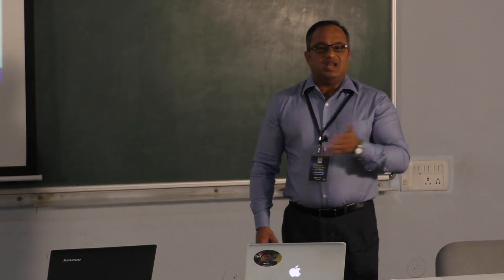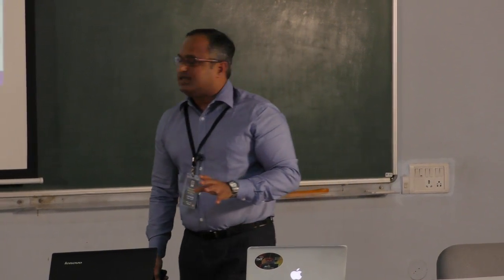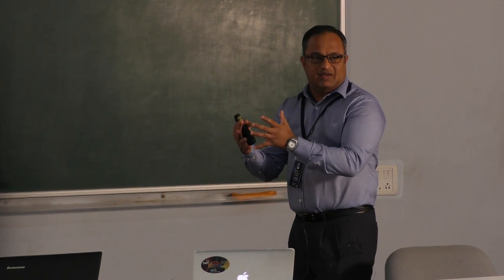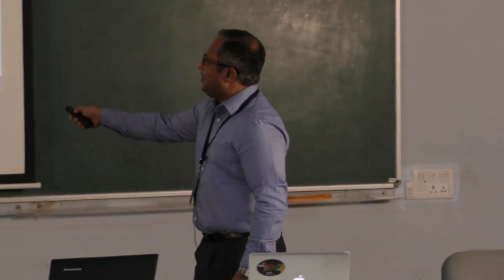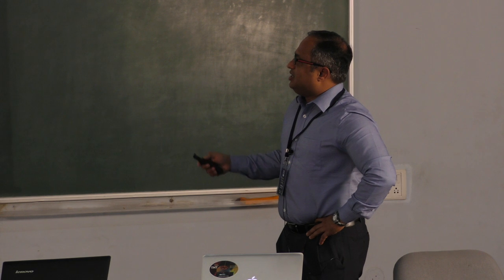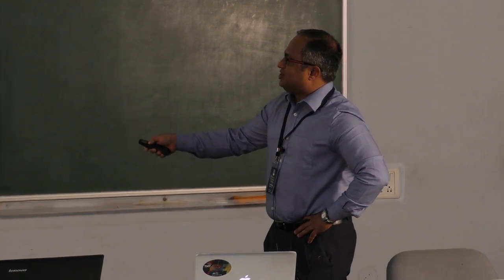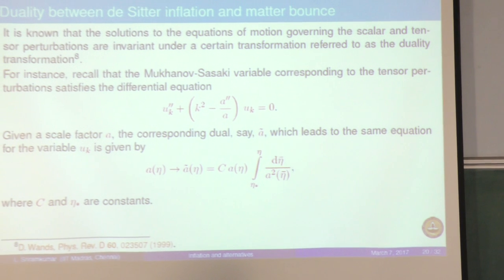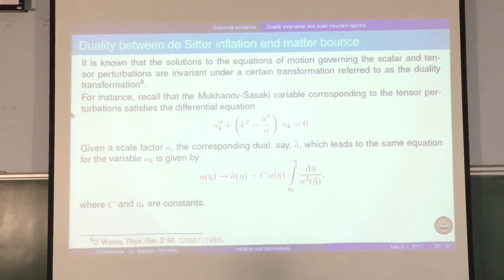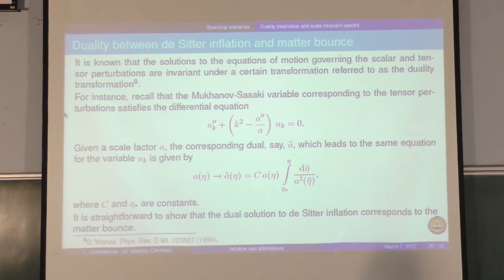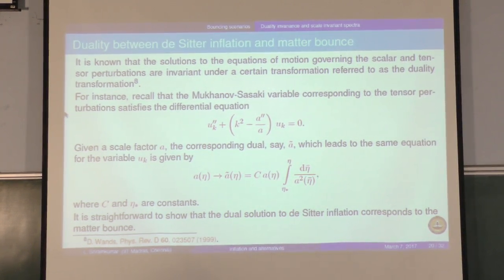Under what conditions can you get a scale invariant power spectrum? We will focus on tensors for simplicity. There is a well-known duality between de Sitter and matter bounce. If you know the equations governing the Mukhanov-Sasaki variable that describes the tensor perturbation, this u_k satisfies an equation where A is the scale factor and primes denote differentiation with respect to conformal time. This equation is invariant under a specific transformation, and therefore your tensor power spectrum can be expected to be invariant under two scale factors A and A-tilde related by this transformation. A-tilde corresponding to de Sitter turns out to be the matter bounce scenario.